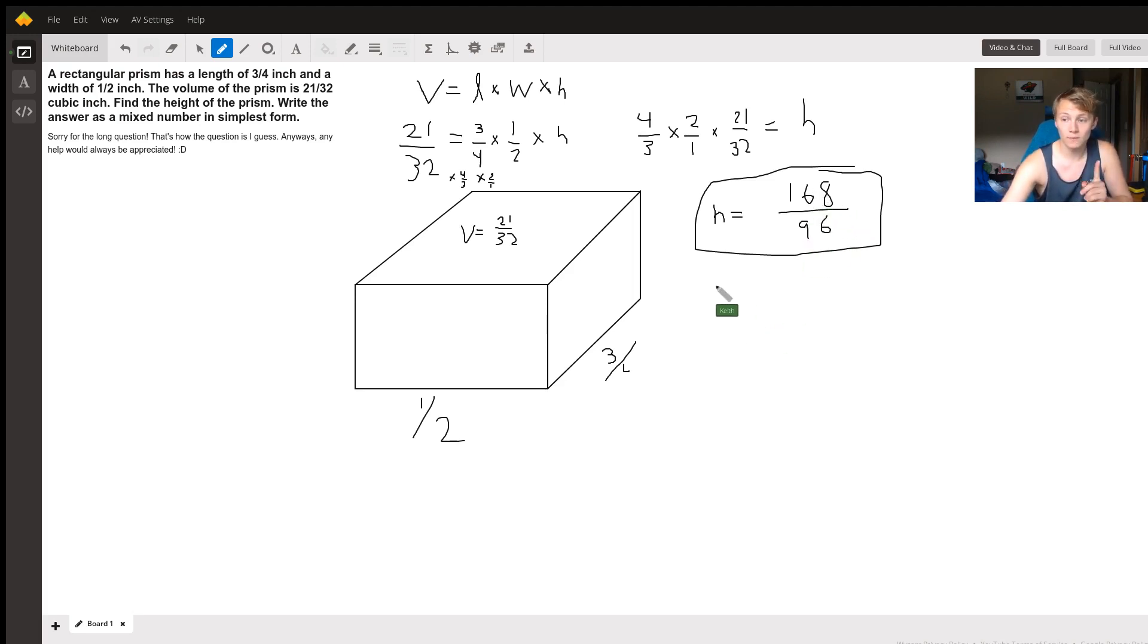So how much are we left over with? Well, we're going to take 168 minus however many times 96 goes into that, which is just 1, so minus 1 times 96, which is just 96, and this will leave us with an answer of 72.